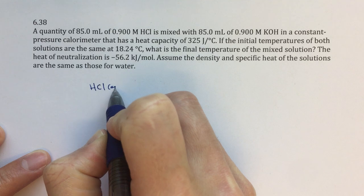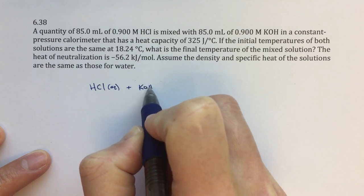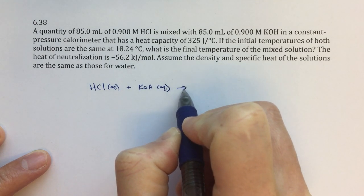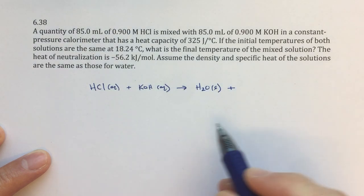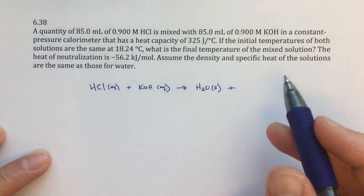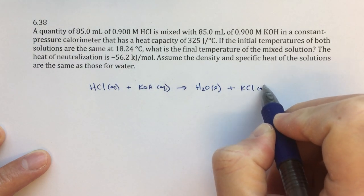So the first thing I want to do is I want to think about the chemical reaction that's going to be occurring here: HCl aqueous plus KOH aqueous goes to H2O. This is going to be a neutralization reaction, so I can recognize a strong acid and a strong base, and then I will get KCl as another byproduct.